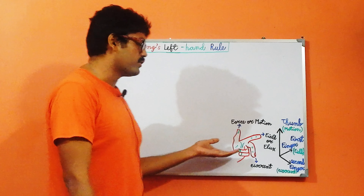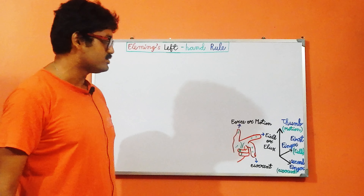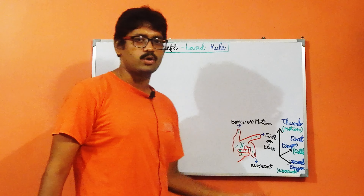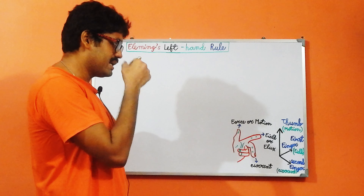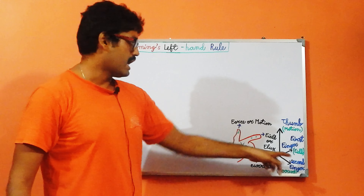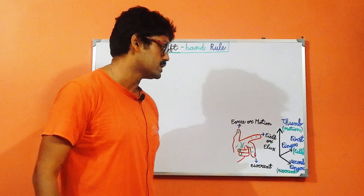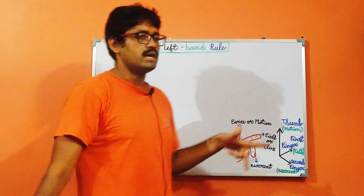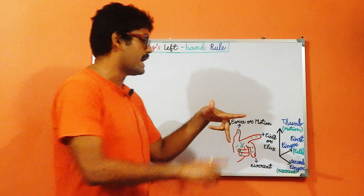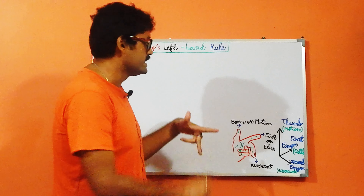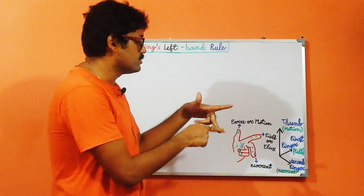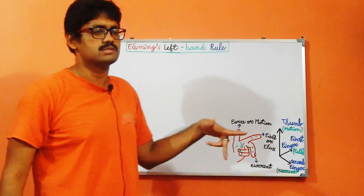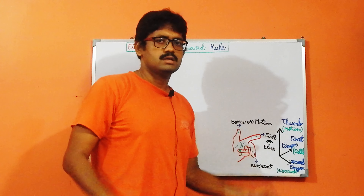The direction of the force is indicated just like this. Once again to summarize: if you stretch your first finger, second finger, and thumb in a perpendicular way, the first finger indicates the direction of the field or flux, the second finger indicates the direction of the current on that given conductor, and the thumb gives us the direction of the force or direction of motion — that is the same thing. This is all about Fleming's Left Hand Rule.